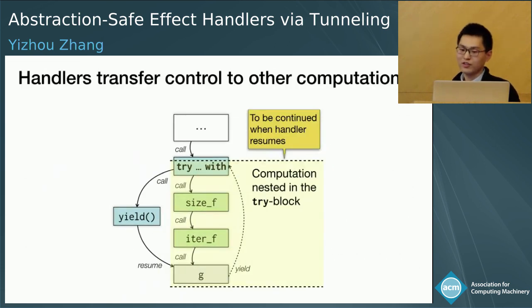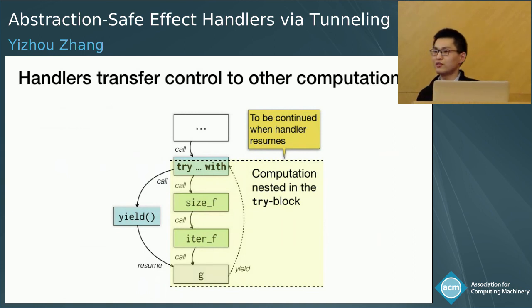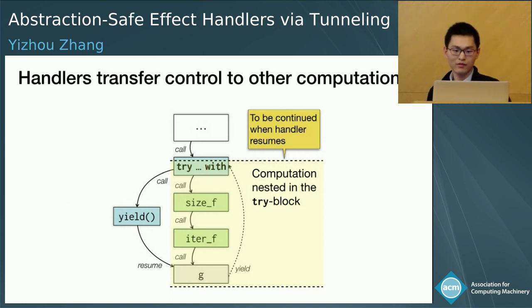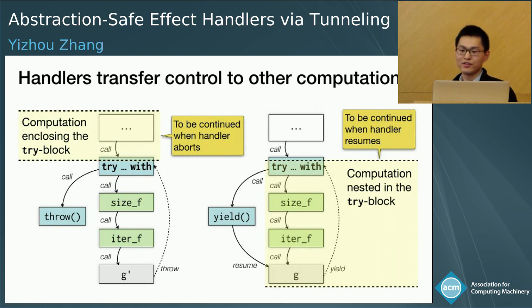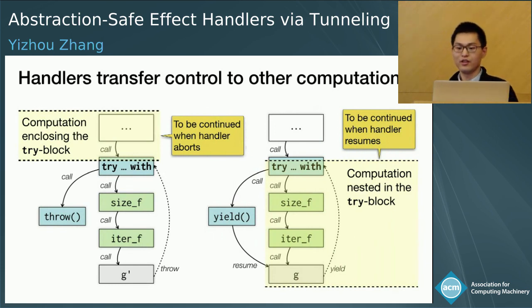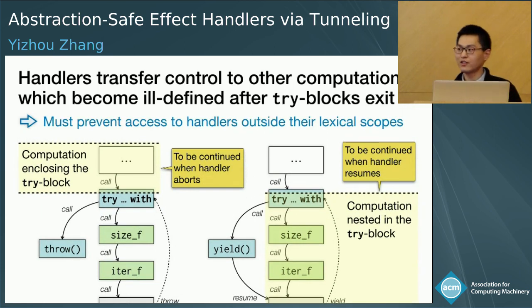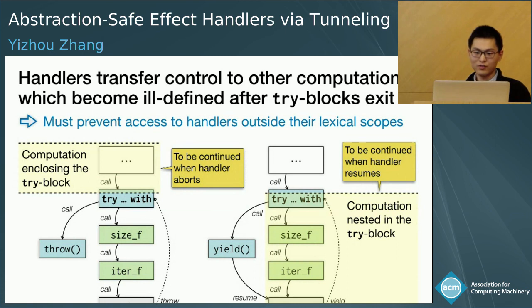A handler transfers control somewhere else after it finishes its job. For example, handlers may choose to continue the computation in a try-block; other handlers, such as exception handlers, abort the try-block computation and continue outside it. In both cases, the to-be-continued computation becomes ill-defined after the try-block exits. So for type safety, we must prevent using handlers outside their try-blocks.